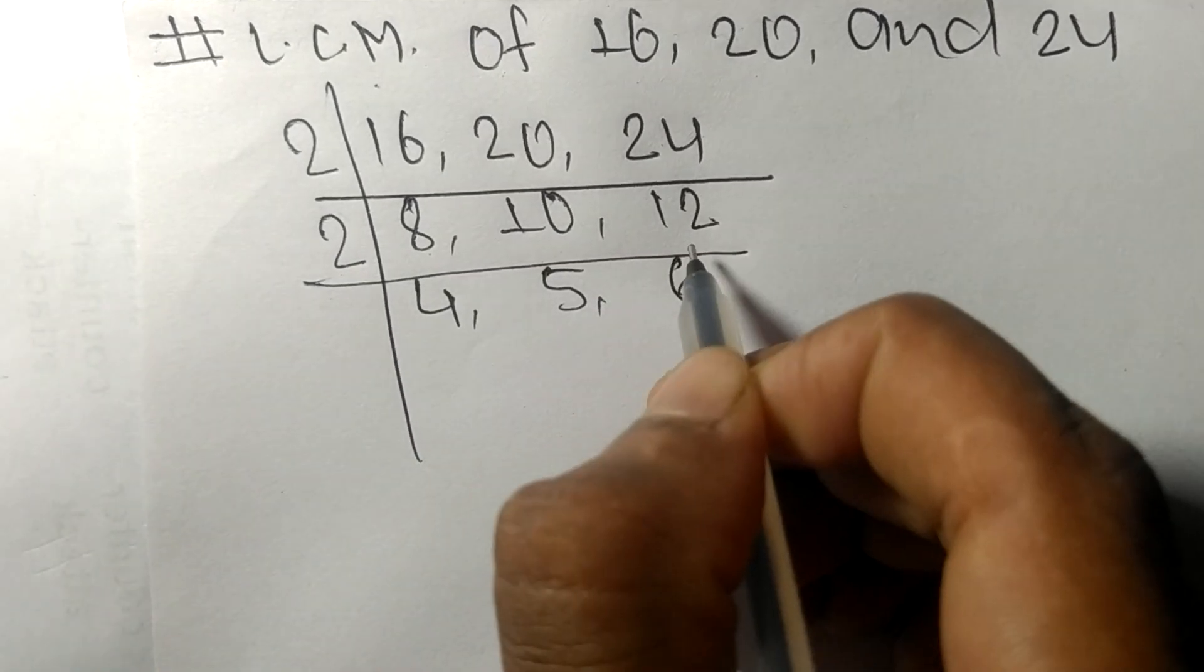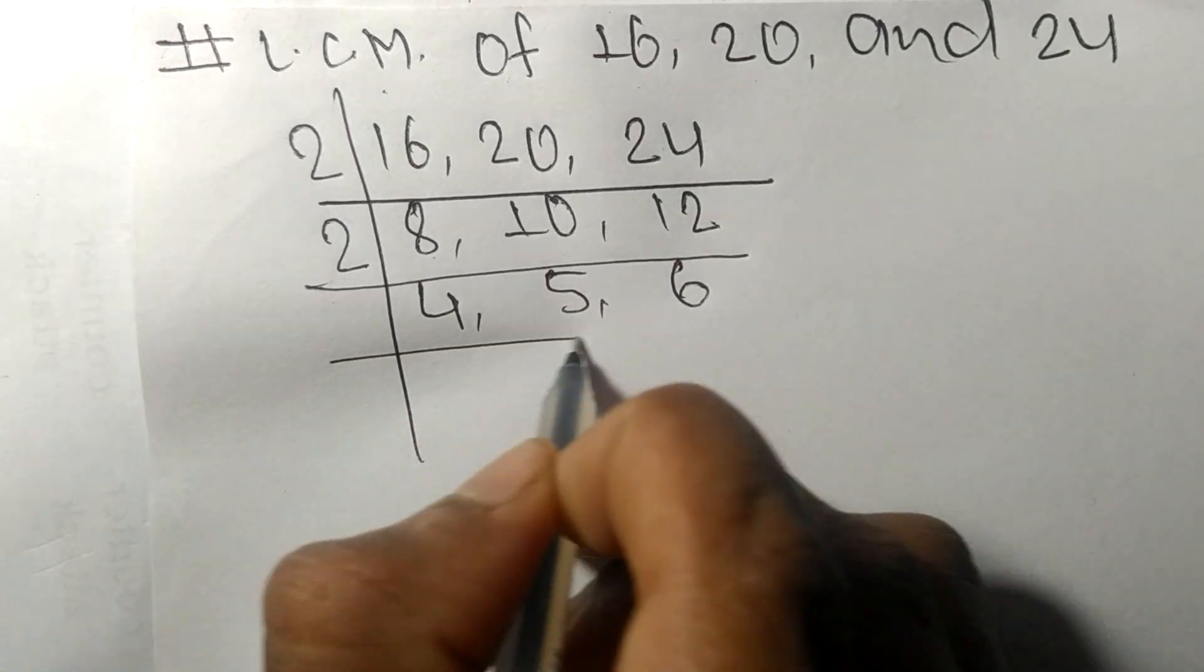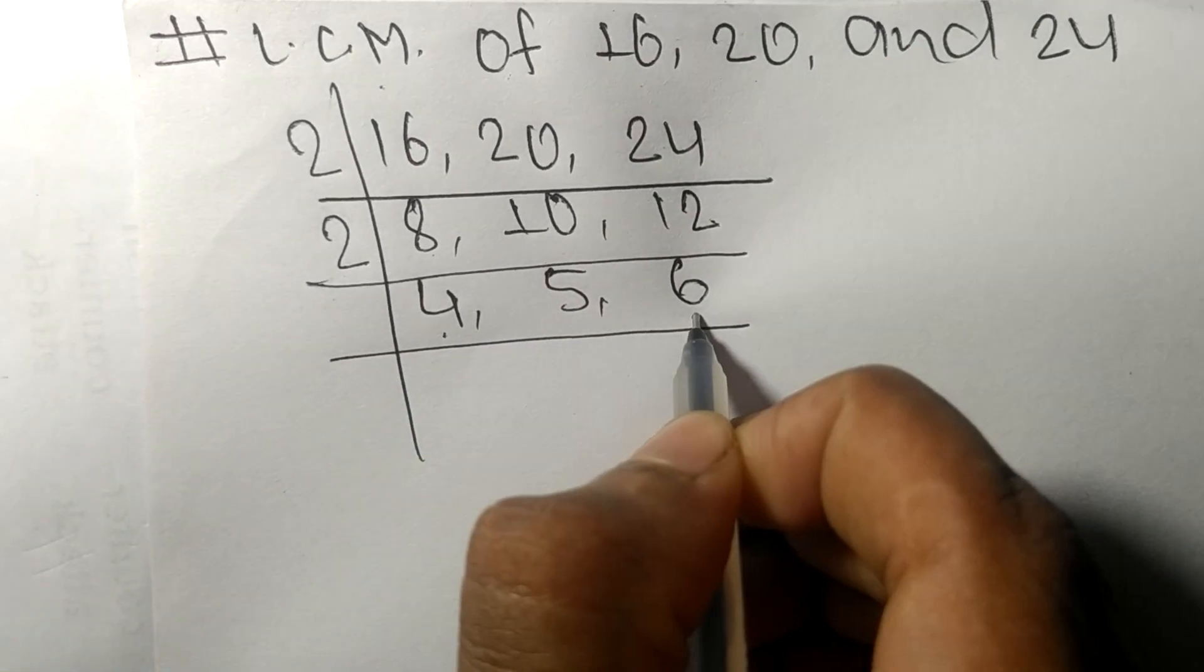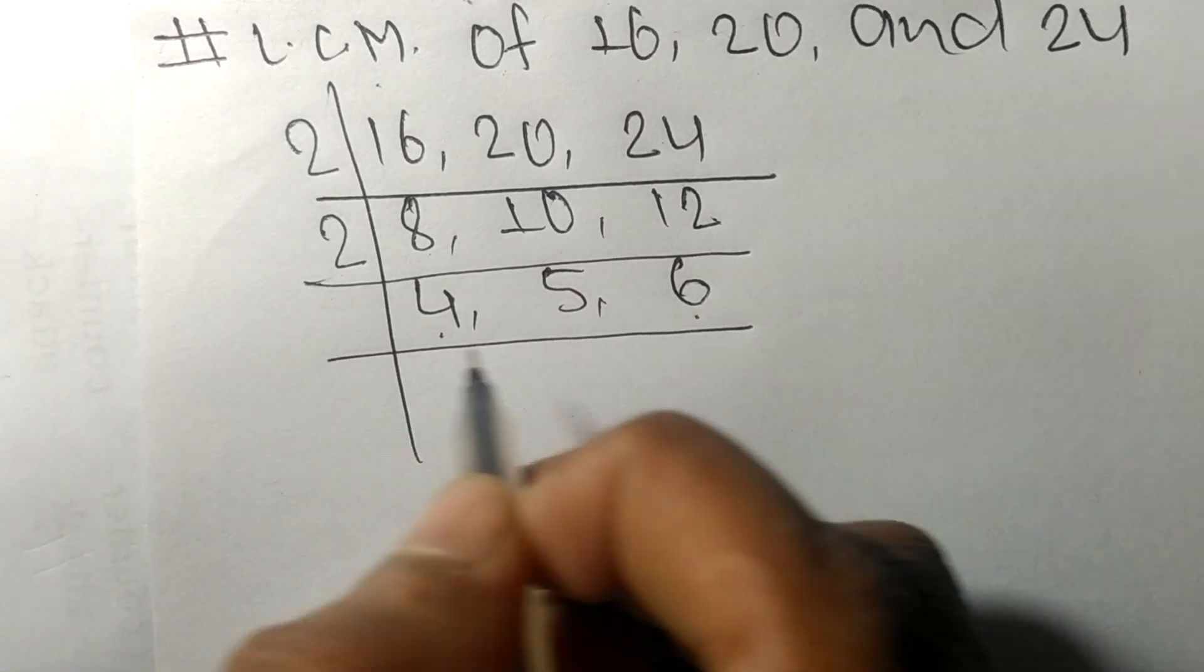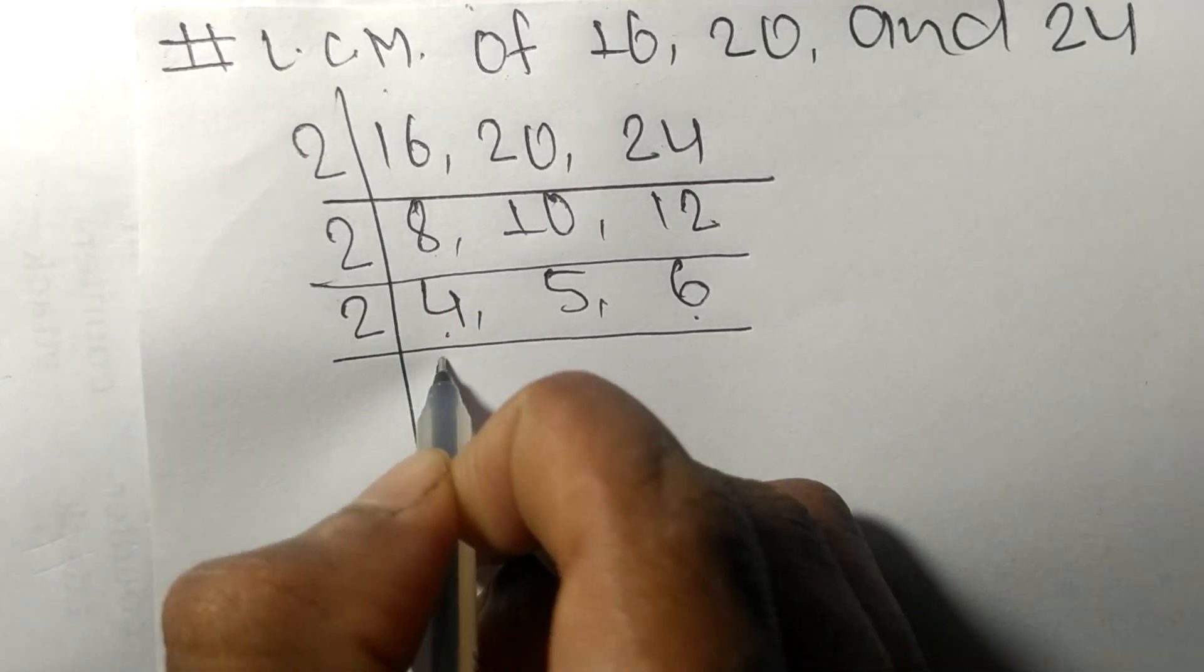Now 4 and 6 are exactly divisible by 2: 2 times 2 means 4, 5 is not divisible so it stays the same, 2 times 3 means 6.